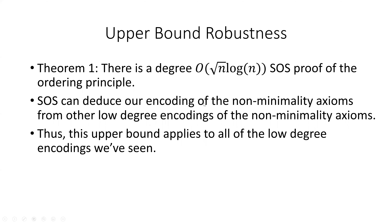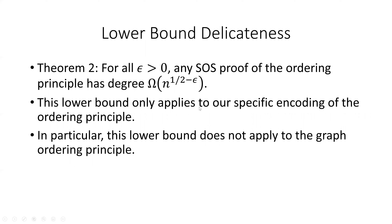Our upper bound is robust in the following sense. Previously, we described several different ways of encoding the non-minimality axioms. It can be shown that the sum of squares hierarchy can deduce our encoding of the non-minimality axioms from these other low-degree encodings. Which means that our upper bound applies to all the low-degree encodings we've seen. On the other hand, our sum of squares lower bound is delicate — it only applies to our specific encoding of the ordering principle. In particular, it does not apply to the graph ordering principle.